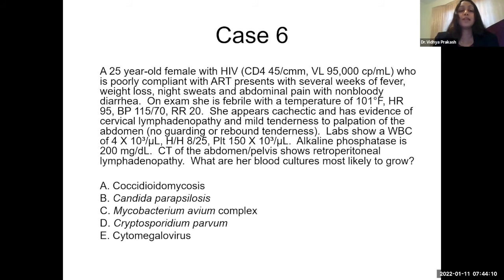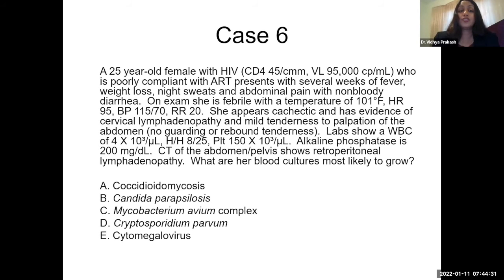A 25-year-old female with HIV, poorly compliant with ART, presents with several weeks of fever, weight loss, night sweats, and abdominal pain with non-bloody diarrhea. Febrile to 101, tachycardic, BP 115/70, respiratory rate 20. Cachectic with cervical lymphadenopathy and mild abdominal tenderness. White count of 4, hemoglobin 8, hematocrit 25, platelets 150, alkaline phosphatase elevated at 200, and retroperitoneal lymphadenopathy on CT. Blood cultures are most likely to grow mycobacterium avium complex.